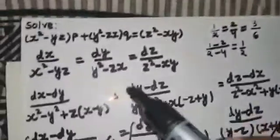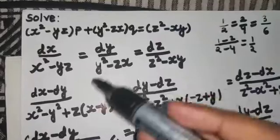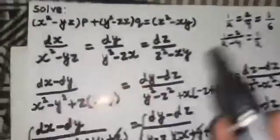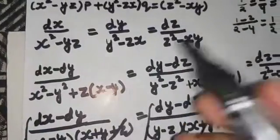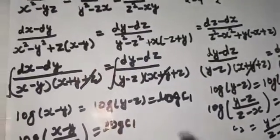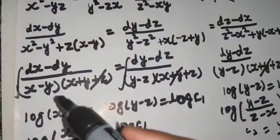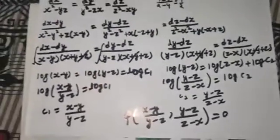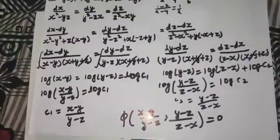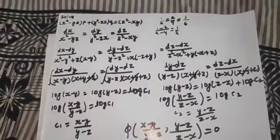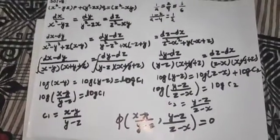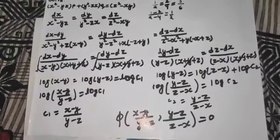The key idea was that since variable separable format didn't work directly, we subtracted fractions — which had no effect on the equations — but eliminated unwanted terms and gave expressions that could be easily integrated. This yielded two functions of x, y, and z equal to constants, which combine into the final general solution.